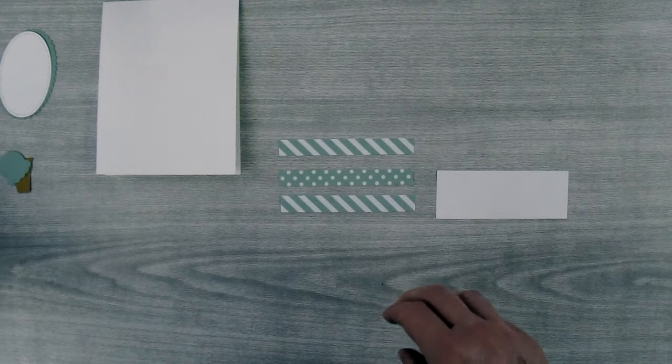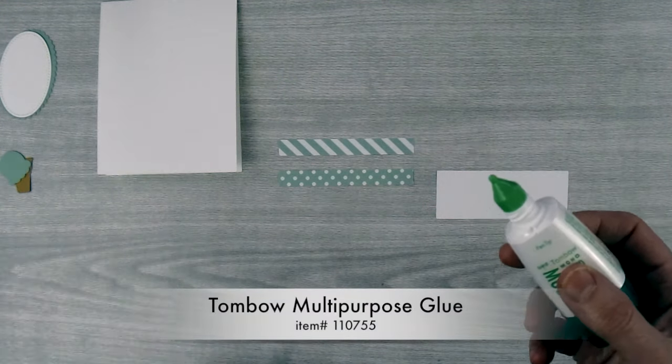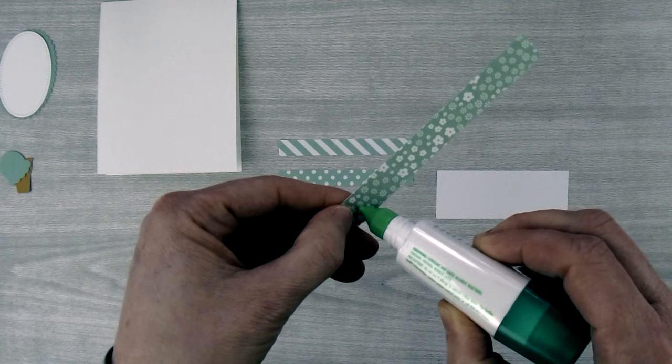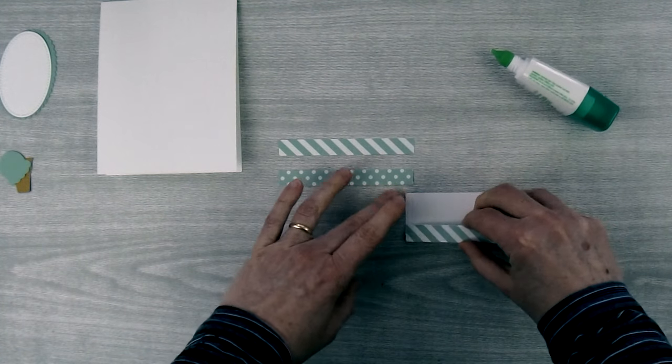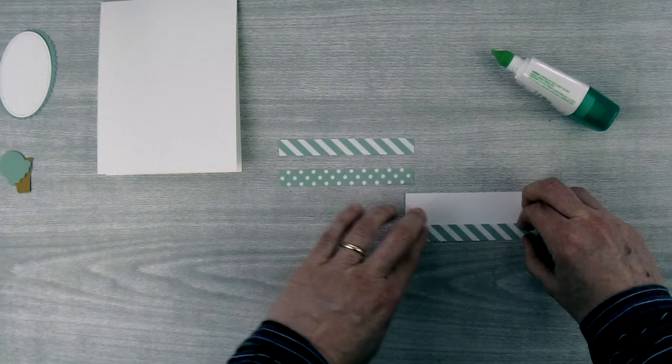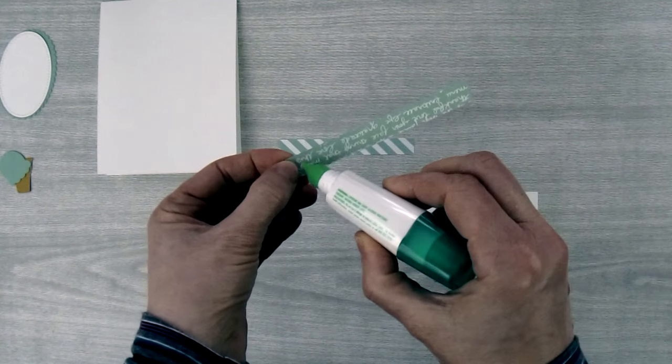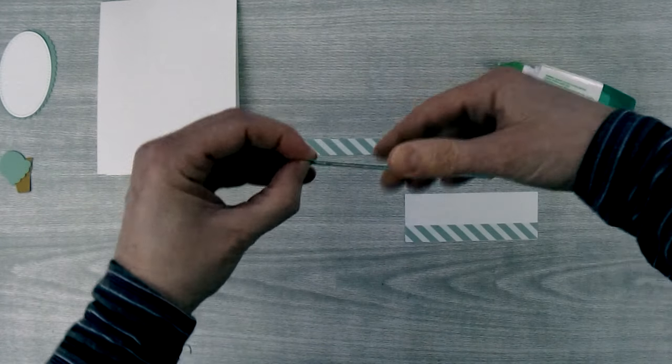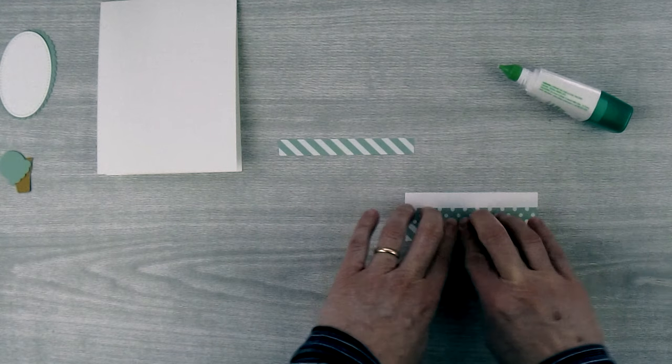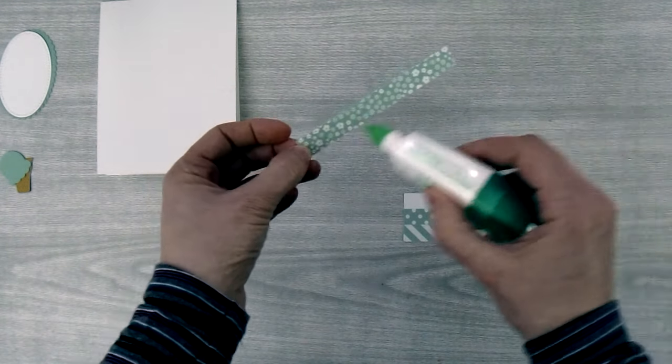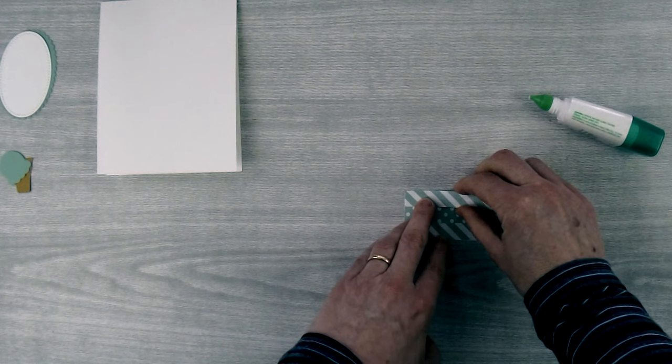So I'll take some Tombow glue and I'll take my first scrap piece and I'm just going to run a bead of glue along the back and I'm going to line it up with the edge of my Whisper White piece. This is just going to help me align the whole thing. Then I'll take my next piece of designer series paper and I'll put a bead of glue on the back and then I can line it up on here. It's looking good. Then one more piece of designer series paper, a bead of glue and then I'm just going to line it up like that.